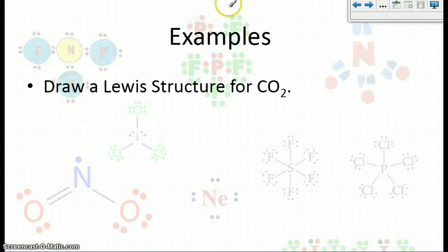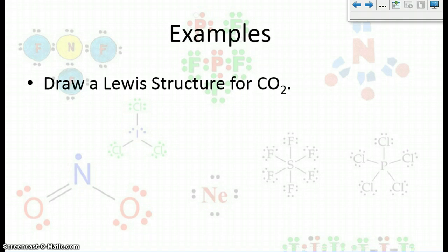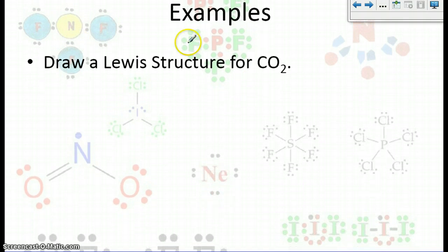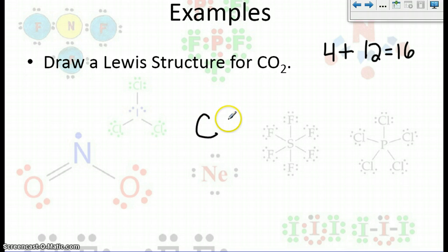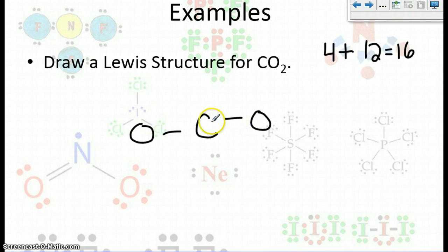Let's try another example: CO₂. C has four valence electrons, and each O has six — so two times six is twelve — giving a total of sixteen valence electrons. First, we're going to connect the oxygens to the carbon. At this point, we've used four valence electrons, so we have twelve left.